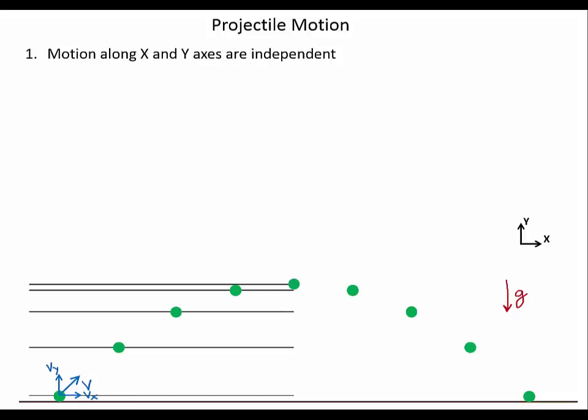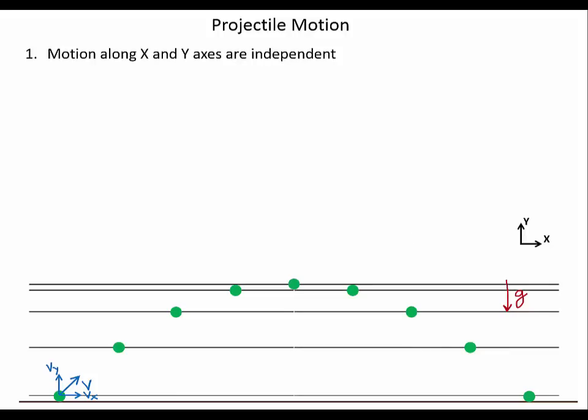And then what happens after it gets to the very top? As it's coming down these lines now guide our eye and show us that as it's going down it gets faster and faster and faster until it falls onto the ground.